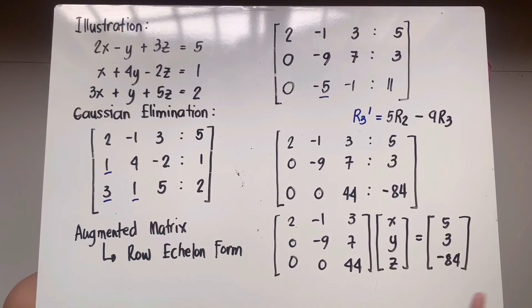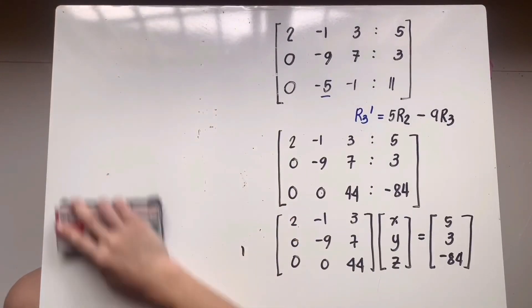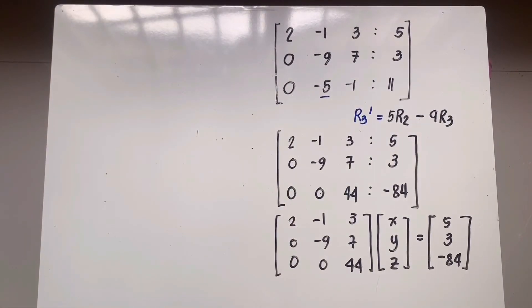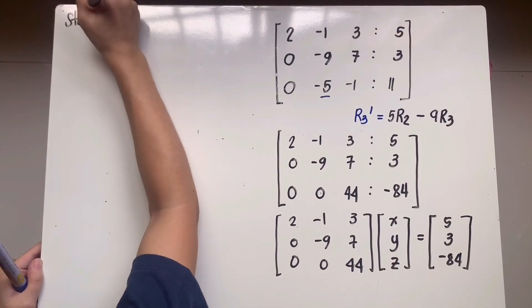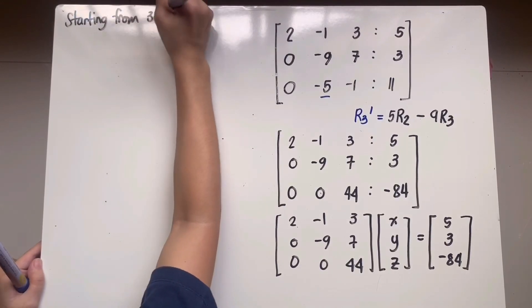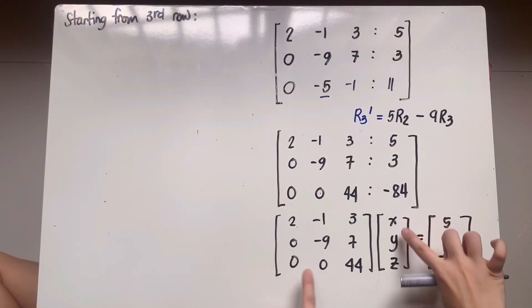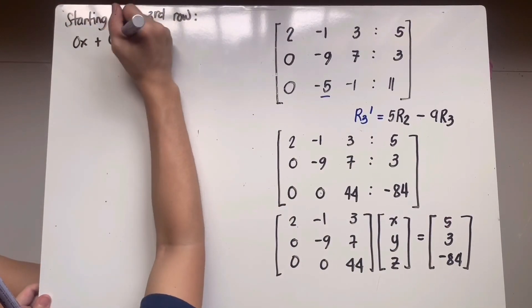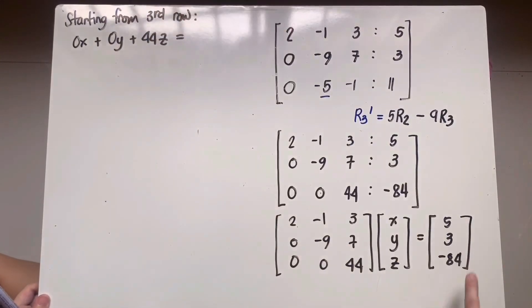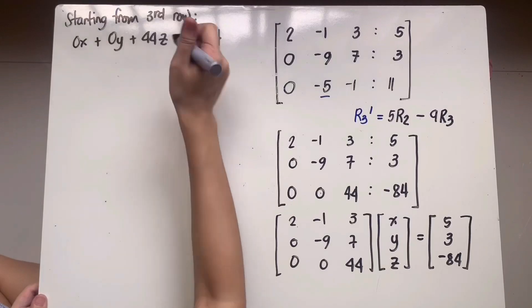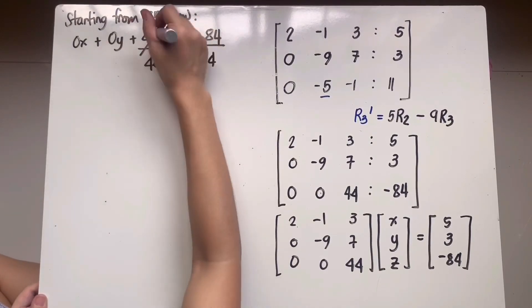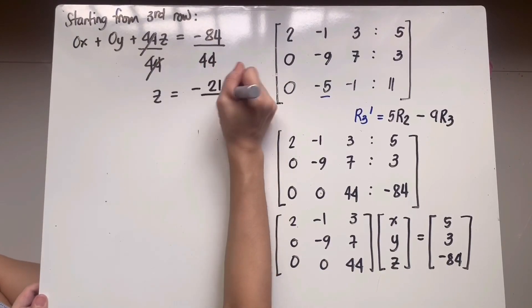Starting with the third row: 0x plus 0y plus 44z equals negative 84. This simplifies to 44z equals negative 84. Dividing both sides by 44, we get z equals negative 21 over 11.